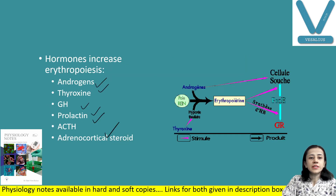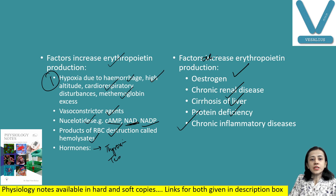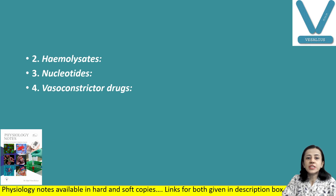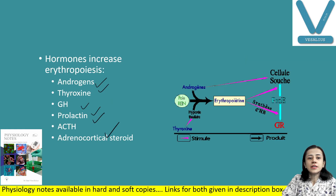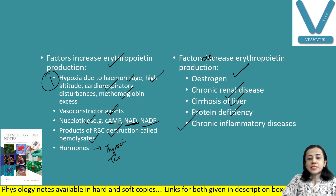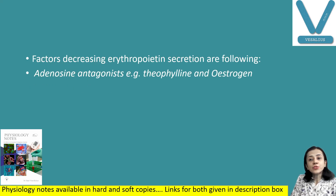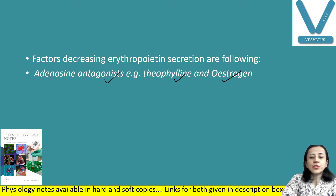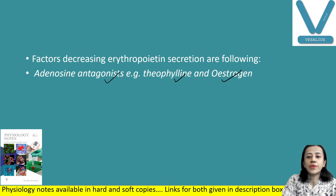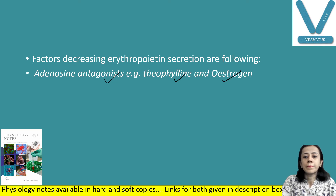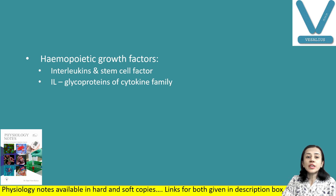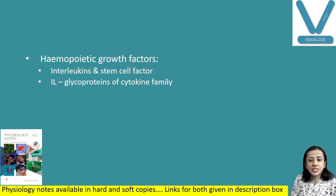Adenosine antagonists like theophylline and estrogen decrease erythropoietin secretion. Hematopoietic growth factors — specifically interleukins and stem cell factor — also increase erythropoietin secretion. Interleukins are glycoproteins of the cytokine family. Interleukin-3 and IL-6 are secreted by T-cells; IL-6 also by endothelial cells and macrophages; and IL-11 is secreted by osteoblasts.